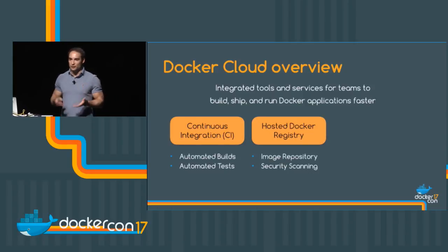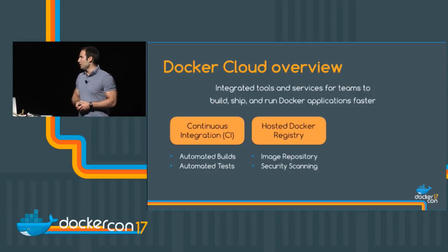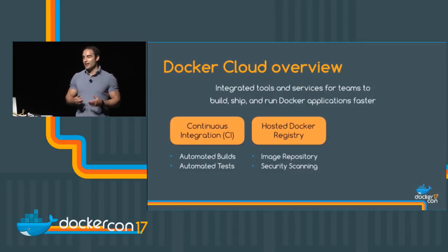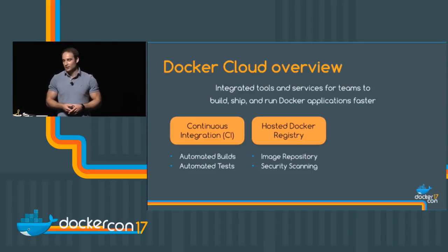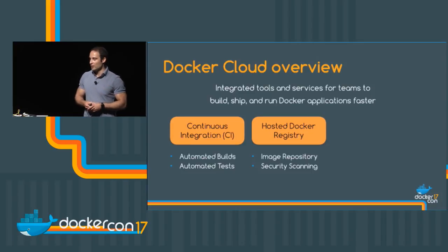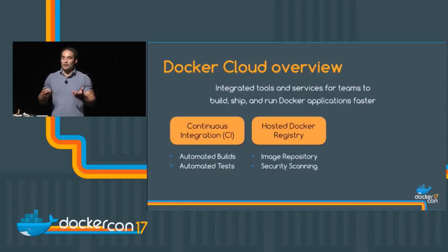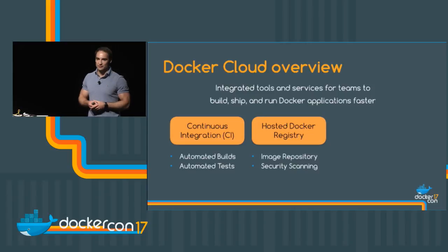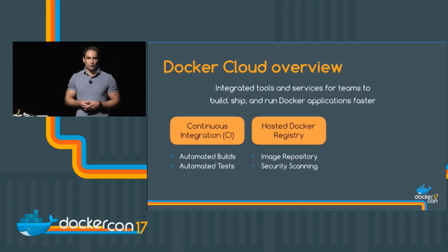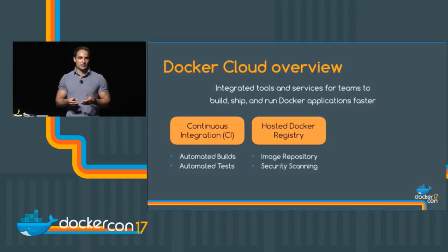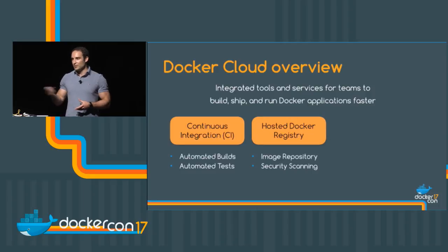Once you have the image automatically built and tested, where do you store it? Docker Cloud is the largest Docker registry in the world. We have over 800,000 repositories and have served over 12 billion pulls today. Not only that, we can also security scan your images — Docker Cloud can binary scan your images for vulnerabilities, so if any third-party component is vulnerable, you have the option to go back, update that component, and push it back before it goes to production.